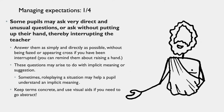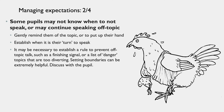When it comes to managing expectations: some pupils may ask very direct and unusual questions, or ask without putting up their hand, thereby interrupting the teacher. Answer them as simply and directly as possible without appearing cross. Do remind them about the policy of raising a hand if you have that in your class. Some questions may arise to do with implicit meaning which has not been understood, and role-playing a situation can help a pupil understand implicit meaning. Keeping terms concrete and using visual aids if you need to go abstract can help in advance. Some pupils may not know when to stop speaking and may continue off topic — gently reminding them of the topic or that it's someone else's turn is better than cutting them off entirely. Establishing a finishing signal or a list of danger topics can be extremely helpful, especially once discussed with the pupil beforehand.